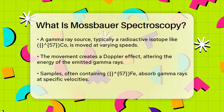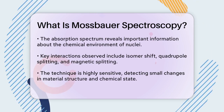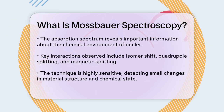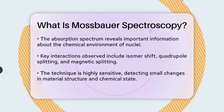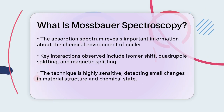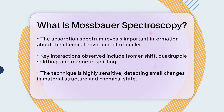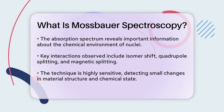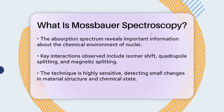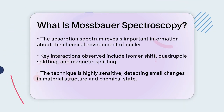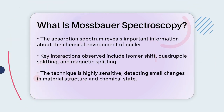There are three main types of interactions that can be observed. The isomer shift, which shows differences in electron densities around the nucleus. Quadrupole splitting, which indicates electric field gradients. And magnetic splitting, which reveals the presence of magnetic fields.